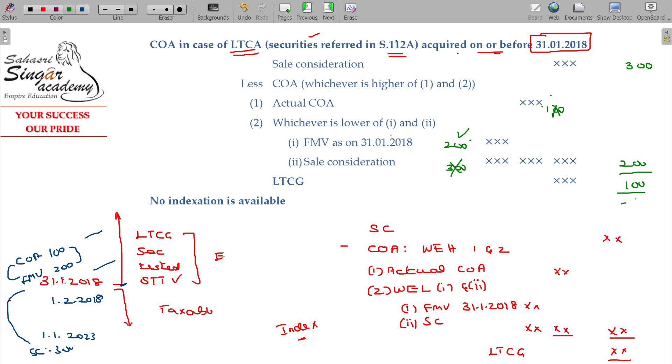Whichever is lower. So if the sale consideration is 50, suppose if the sale consideration is 50, actual cost of acquisition 100, and fair market value on the date of presenting in the budget being 200, sale consideration 50.